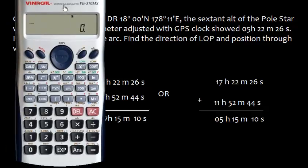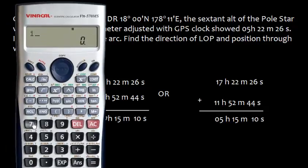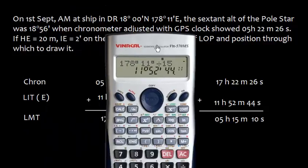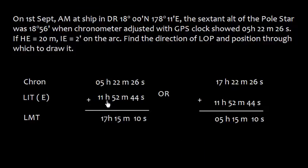Suppose this is 178° 11'. I'll put this degree, I just need to divide by 15, and I get 11h 52m 44s. Same thing here, 11h 52m 44s. This is our minute and second.